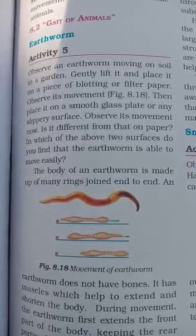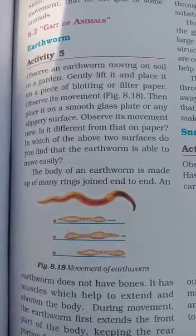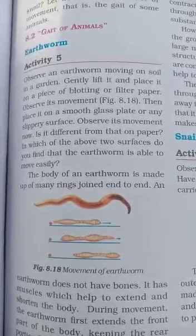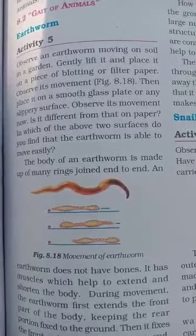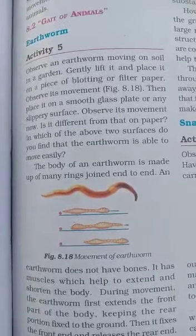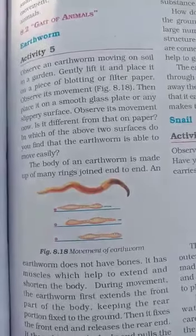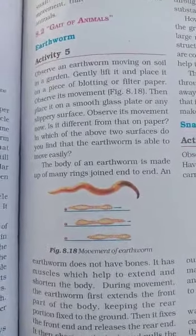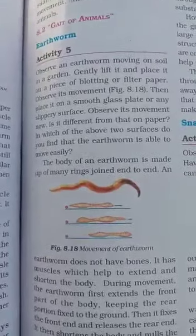Good morning students, today we will discuss the next subtopic: movement of earthworm. All animal categories, including human beings, move from one place to another using different parts of the body. For example, human beings move using legs, butterflies move using wings, and cows move using legs. The movement of different organisms from one place to another is called locomotion.